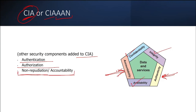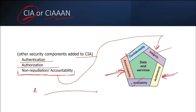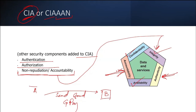Non-repudiation is indirectly related to integrity. Say person A sends money online to friend B using Google Pay. B is supposed to acknowledge receiving it. If B denies receiving the money — even though B actually received it — B is denying the reality. That is called repudiation.